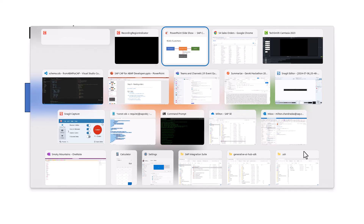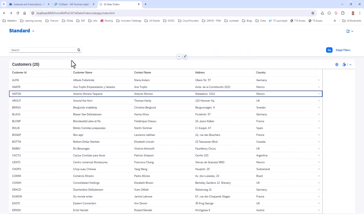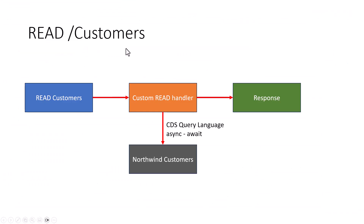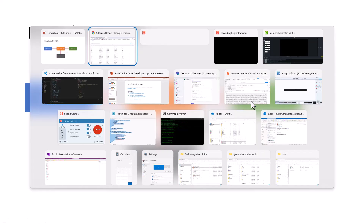Let's have a look at the UI. The UI looks something like this in our application. The very first page has a list of all the customers. At this point, I don't need to show the orders, so the request is just slash customers. Because getting the orders is an expensive operation, I just want to read the Northwind customers and send the response back. This is our local customers table used as a pass-through.